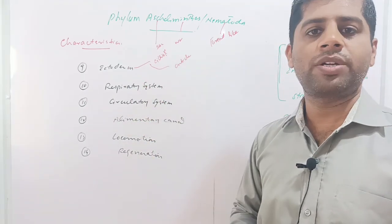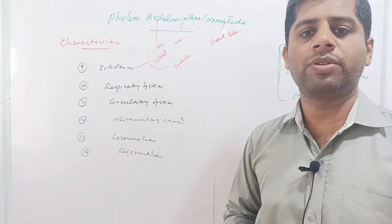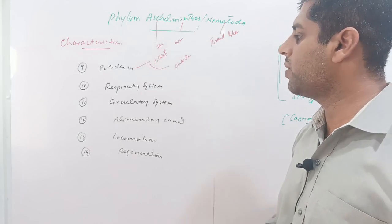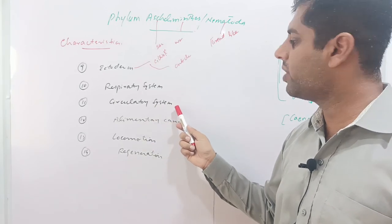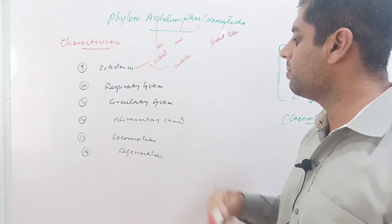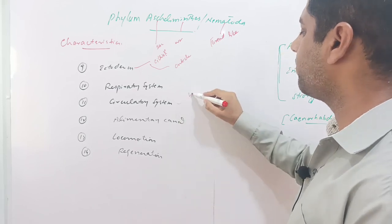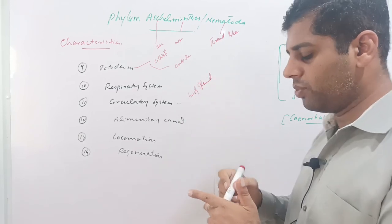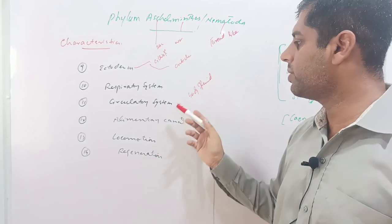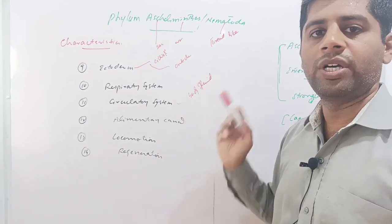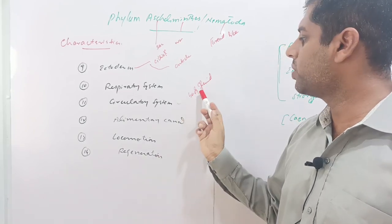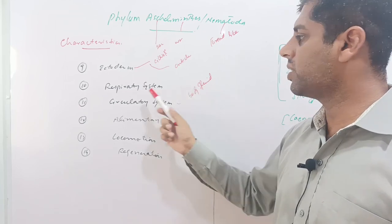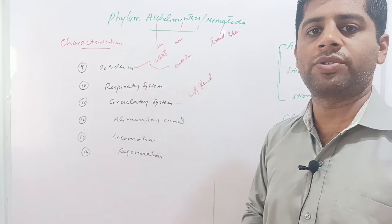There is no specialized respiratory system in nematodes — they are deficient in a respiratory system. However, the circulatory system is present in the form of body fluid, which performs the function of blood. This body fluid is also responsible for the exchange of gases, effectively executing respiratory functions as well.